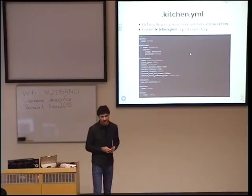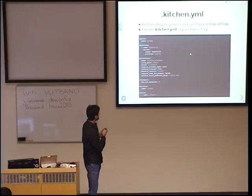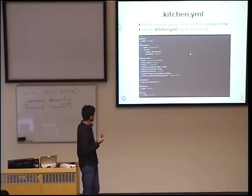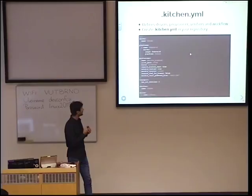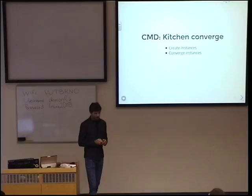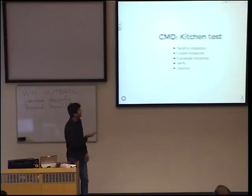What is kitchen.yaml? It defines all the stuff I showed you before: we start with drivers, platforms, provisioners, then verifiers — all those concepts are defined here. In this example, I use the Docker driver with Fedora 26, then provision the virtual machine using Ansible, and in the last step verify it using InSpec. To run the tests, there are just simple commands: you run kitchen-converge or kitchen-test, and it will execute the workflow.